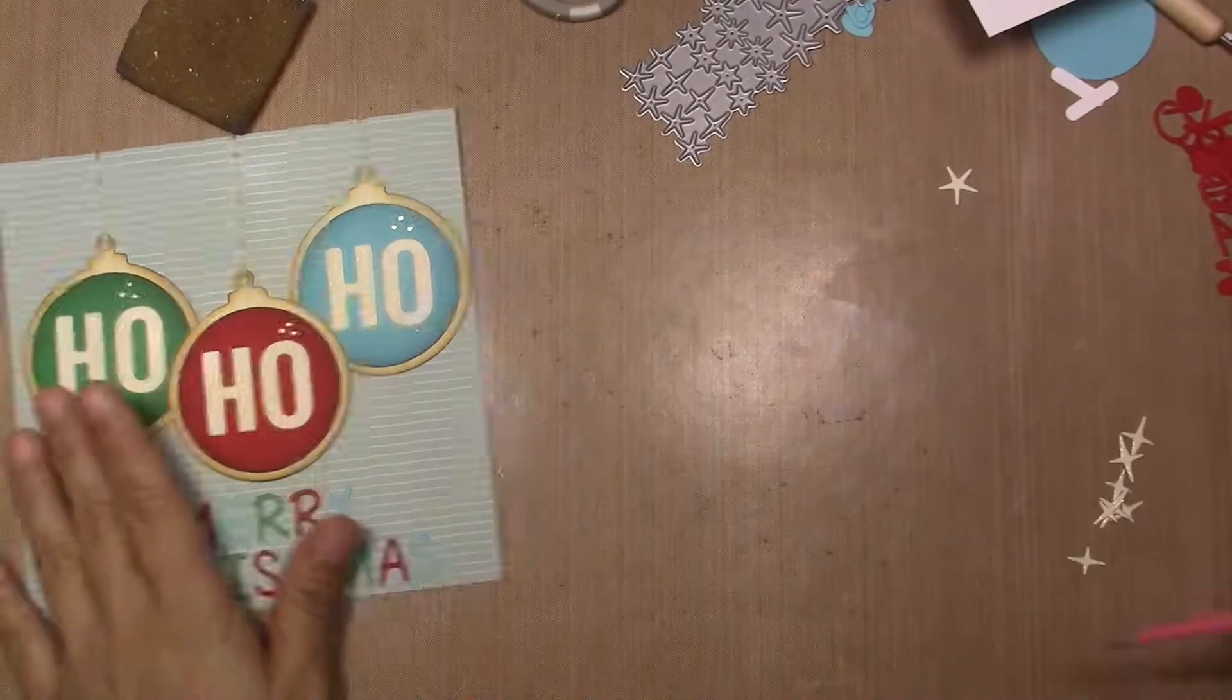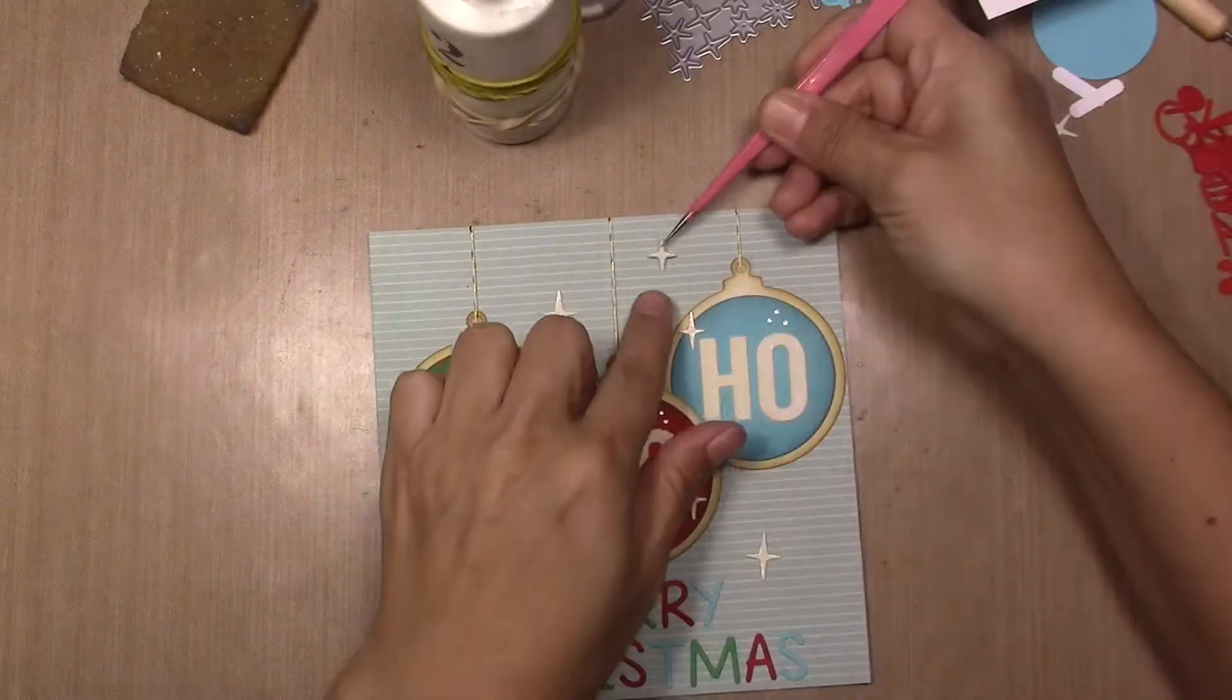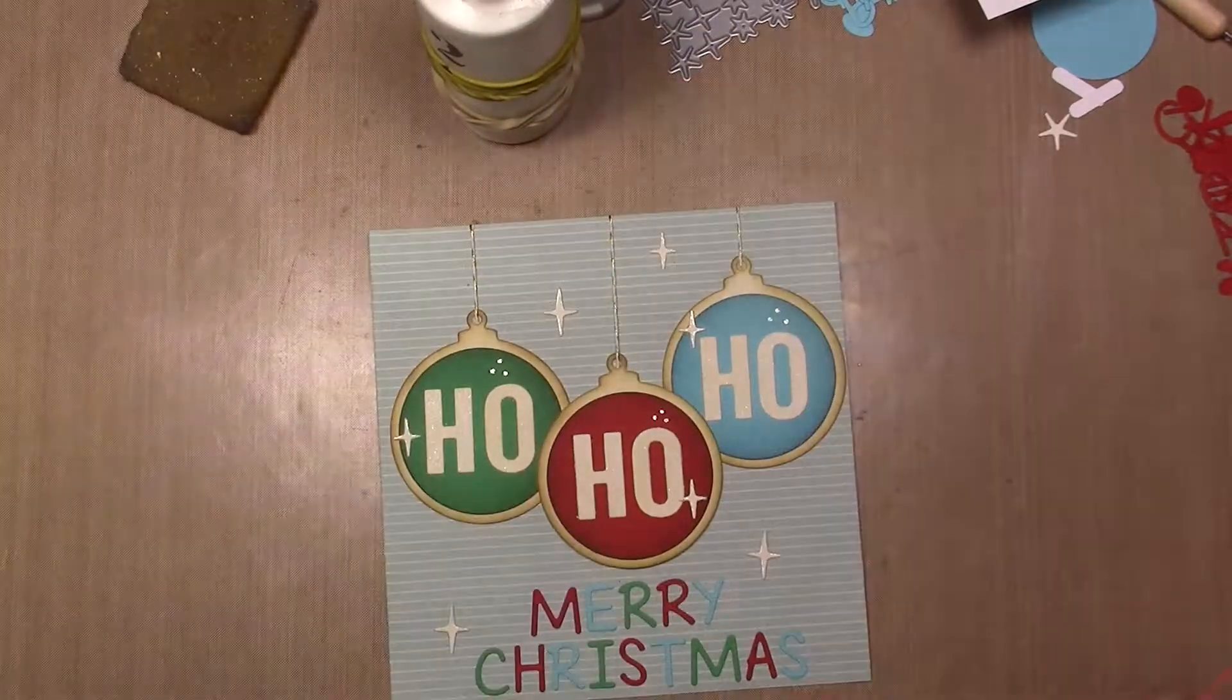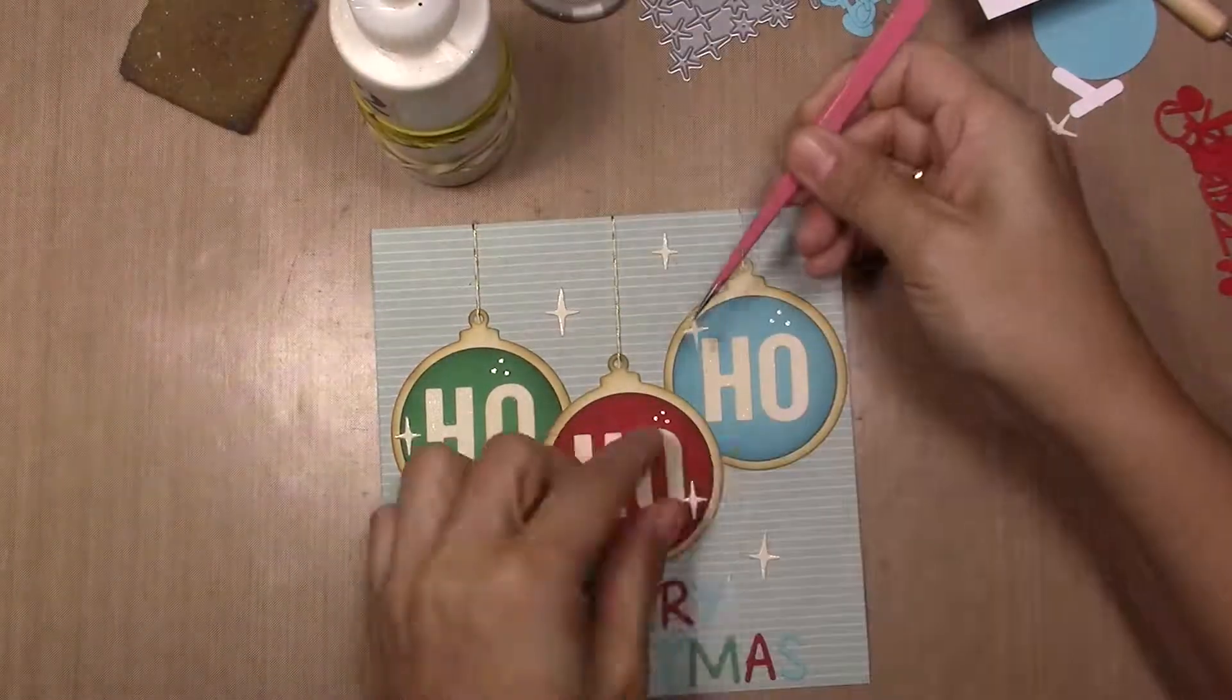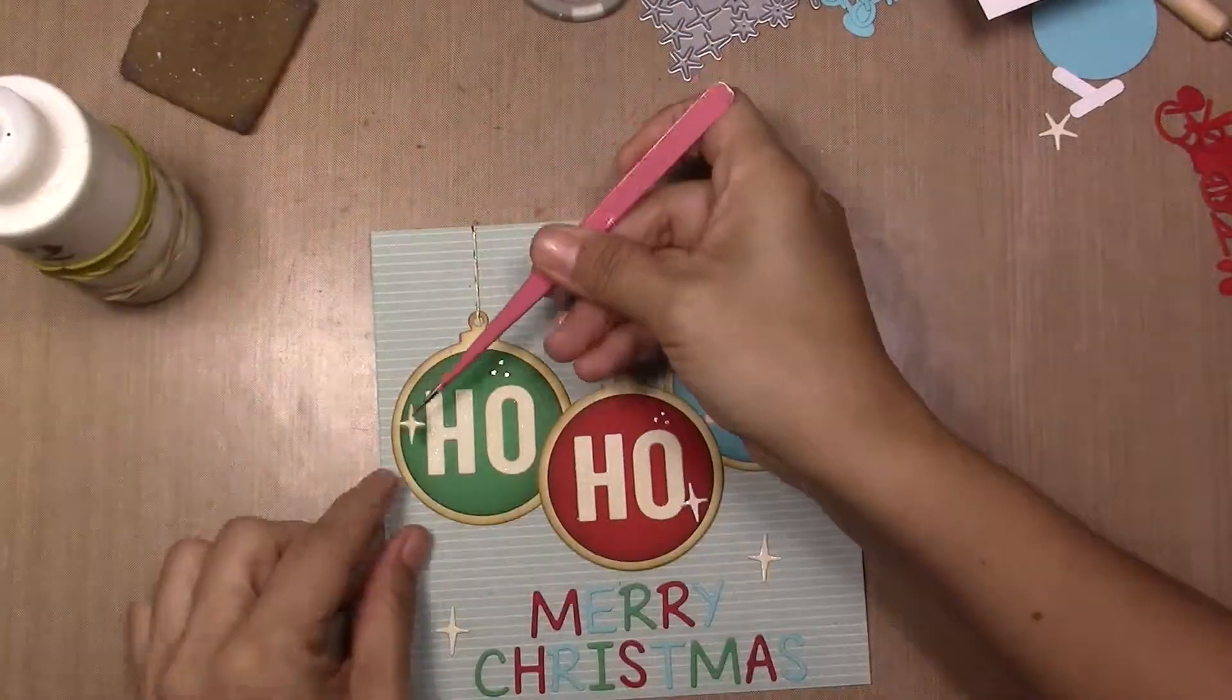I use my glitter gel pen to add three little dots on the ornaments and two around these stars, and I'm going to apply them scattered around the letters, the card and the ornaments.